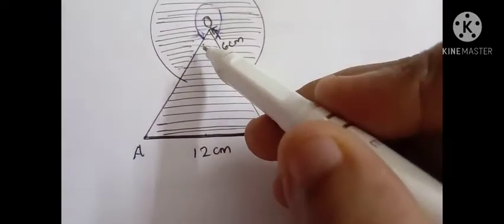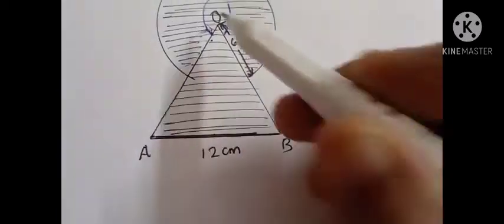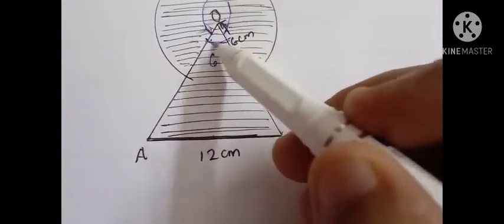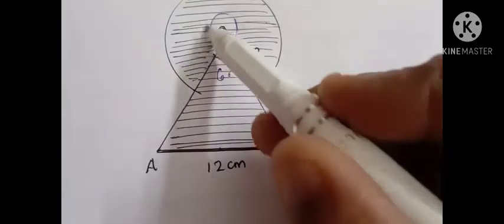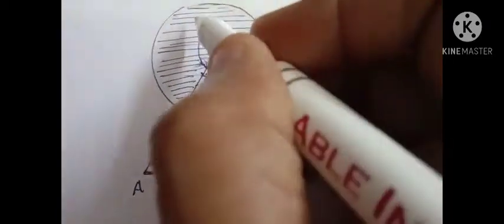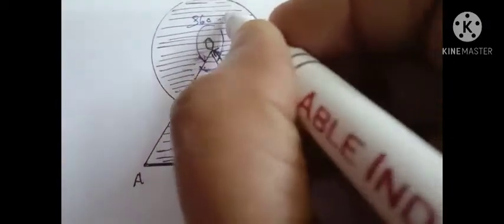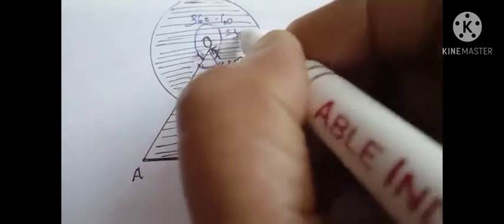We already know that ABO is an equilateral triangle, so all three angles are equal — that is 60 degrees each. So this angle at O is 60 degrees. The remaining angle will be 360 minus 60, that is 300 degrees.